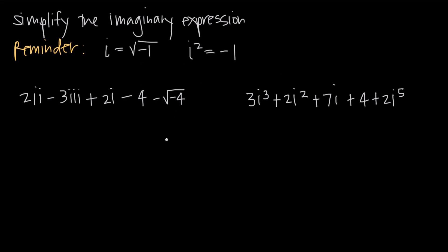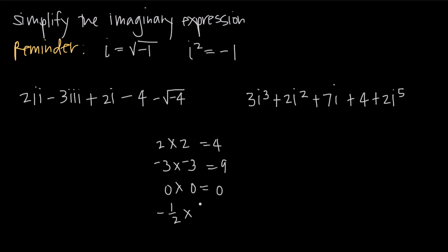What is an imaginary number? If we try to multiply two numbers together with the same sign, we're never going to get a negative number. For example, if we multiply 2 by 2, we get positive 4. If we do negative 3 times negative 3, we get positive 9. If we do 0 times 0, we get 0. If we do negative 1 half by negative 1 half, we get positive 1 fourth. No matter what number we pick, when we square it, we always get a number that's 0 or positive.